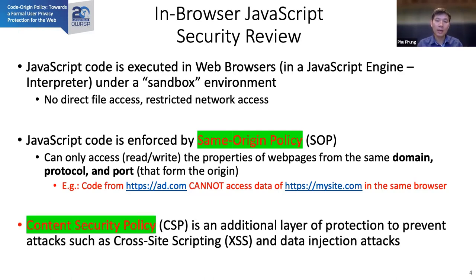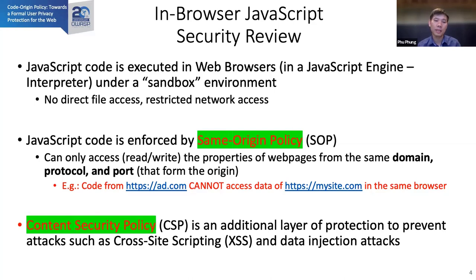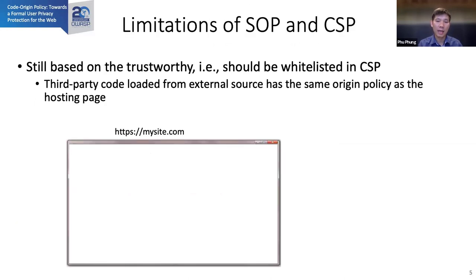A later mechanism is called Content Security Policy. This is an additional layer to protect against attacks — for example, cross-site scripting, where an attacker can inject malicious code and execute it. However, there are some limitations with these mechanisms.